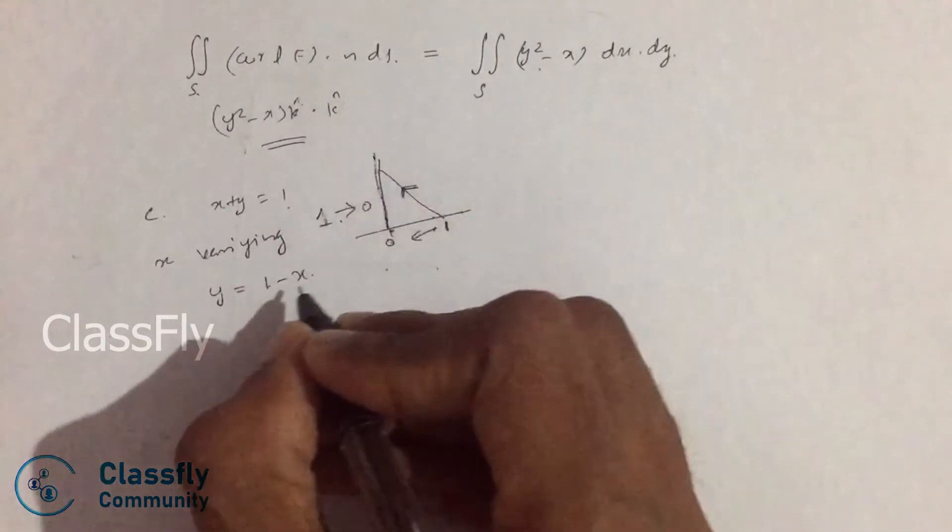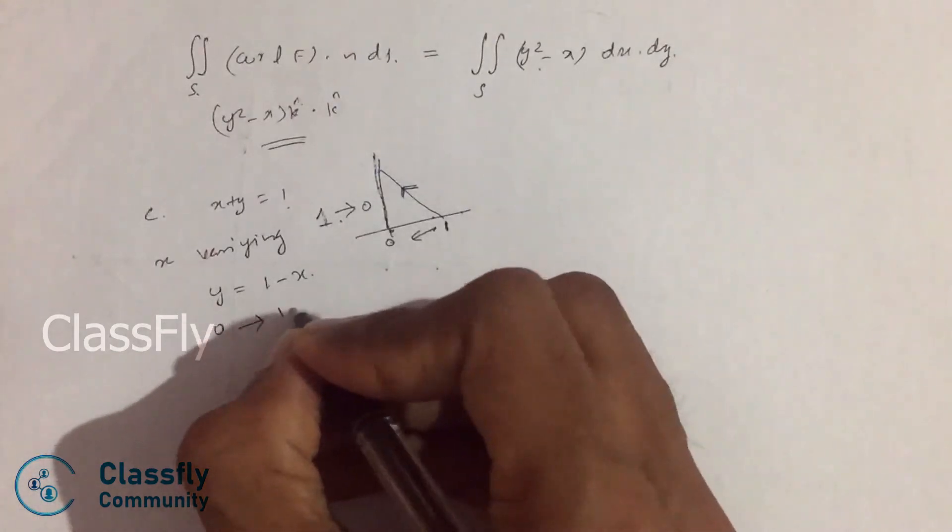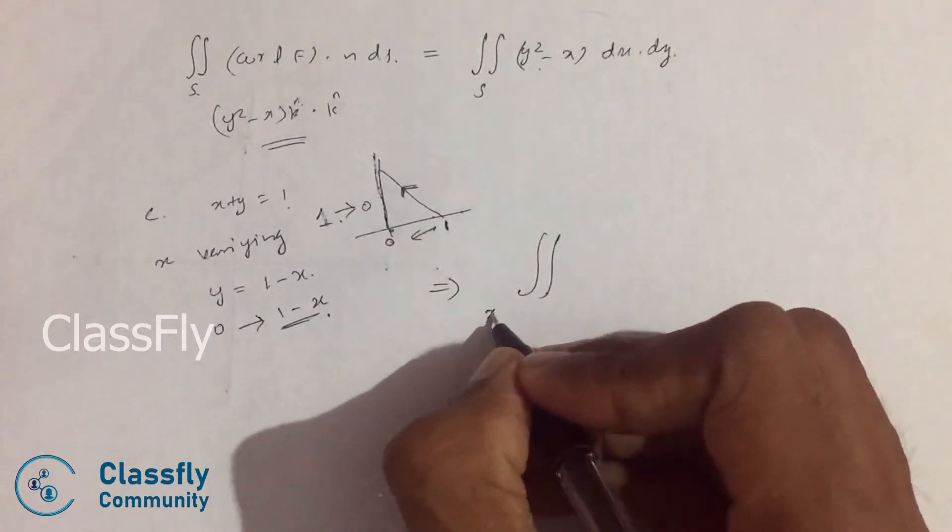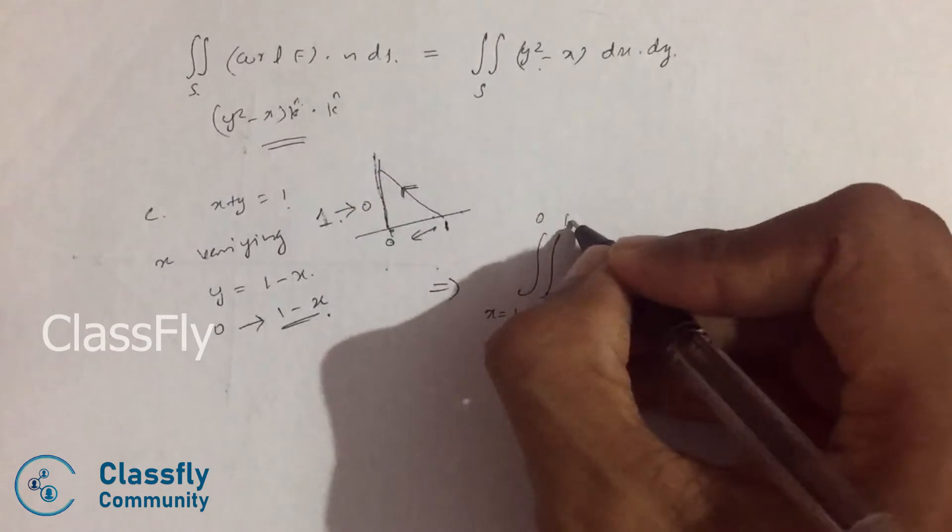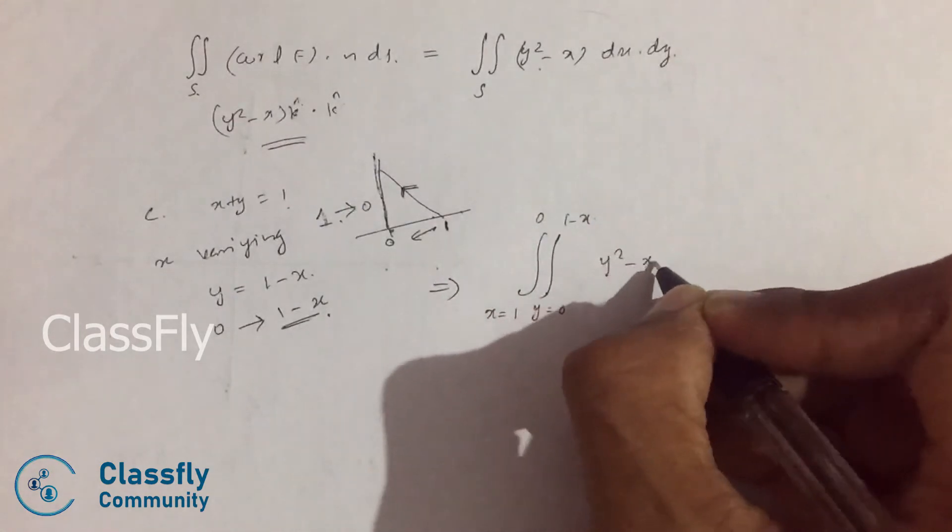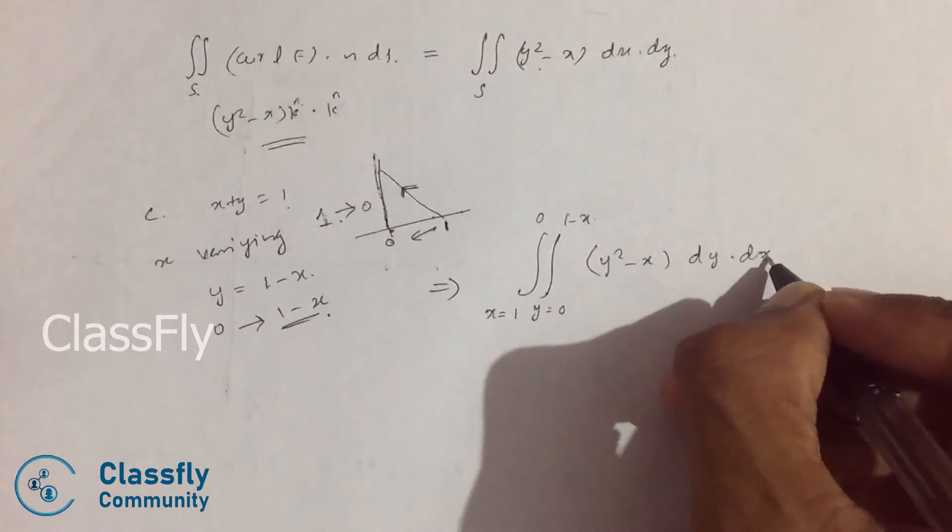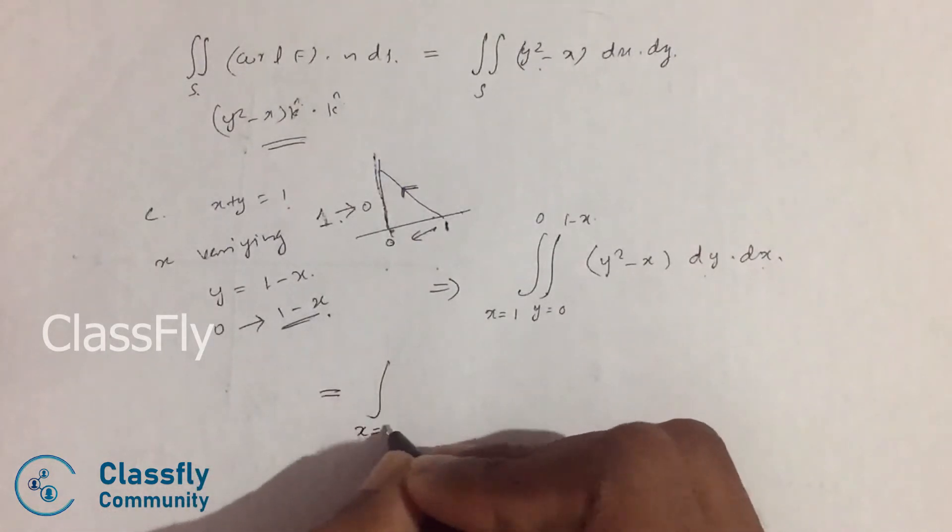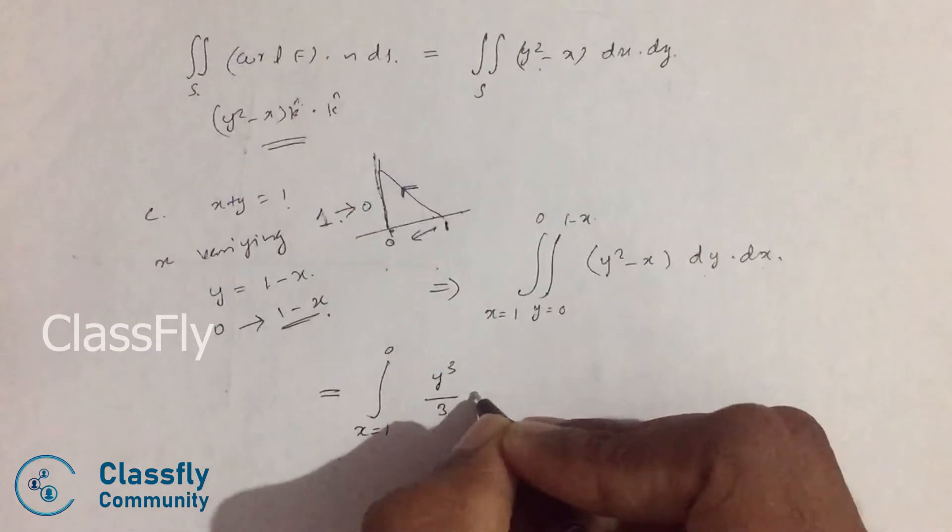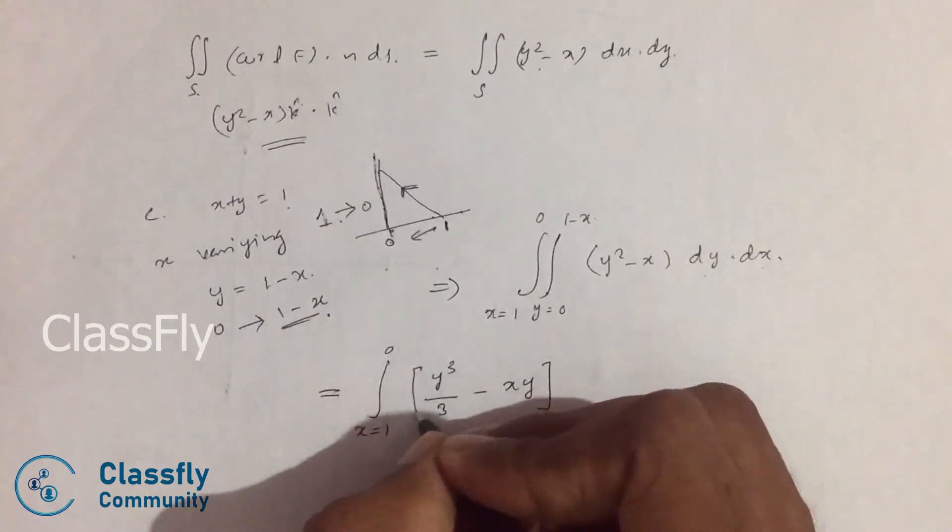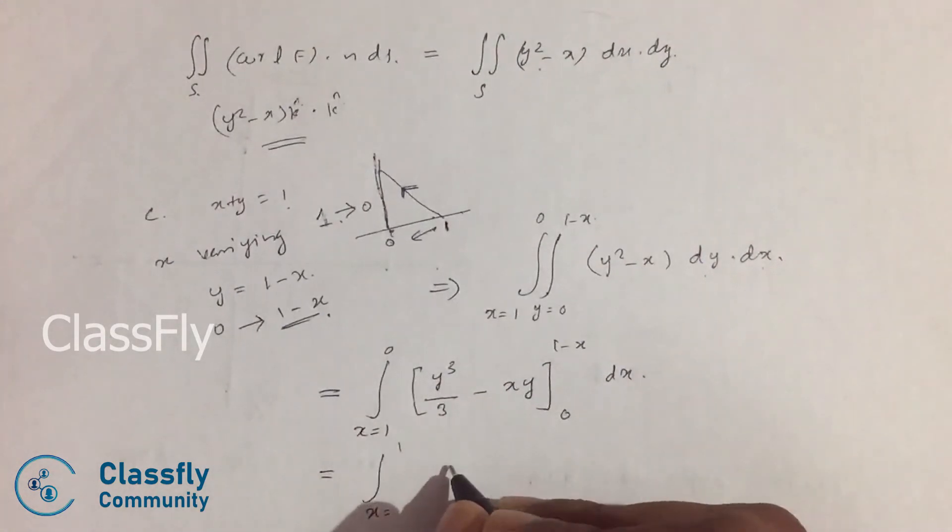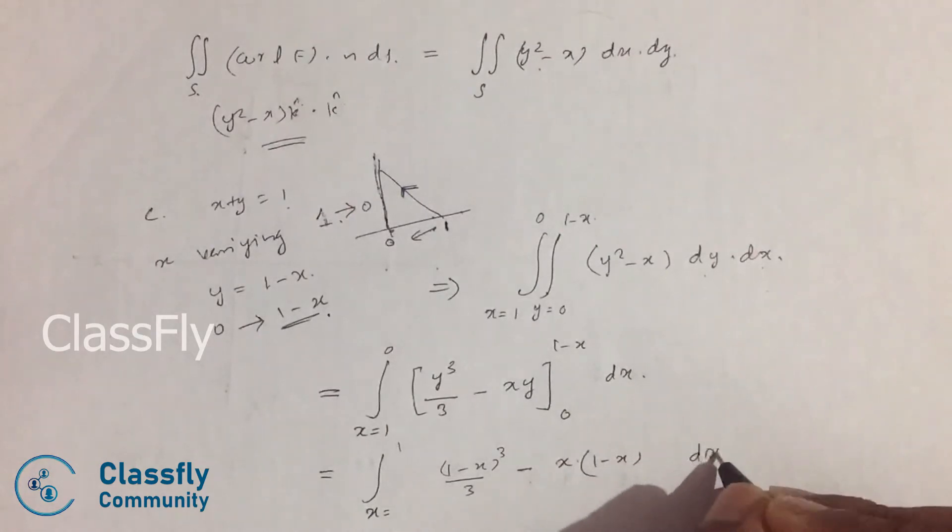Which varies from 0 to 1 minus x. Giving double integral x equal to 1 to 0, y equal to 0 to 1 minus x, (y squared minus x) dy dx. We are integrating first with dy then with dx, which is equal to integral x equal to 1 to 0, [y cubed divided by 3 minus xy] from 0 to 1 minus x, dx. Applying the limits, we get x equal to 1 to 0, [(1 minus x) cubed divided by 3 minus x times (1 minus x)] dx.